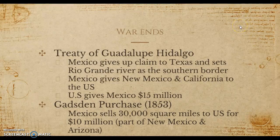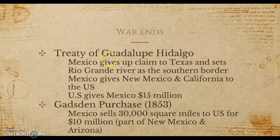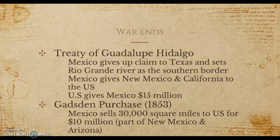The war eventually ended, and you need to know that the Treaty of Guadalupe Hidalgo is the treaty that ended the Mexican-American War. As part of this treaty, Mexico gave up claim to Texas and set the Rio Grande River as the southern border. Essentially, Mexico conceded: America gets Texas, and the Rio Grande River is now the southern border between Texas and Mexico.